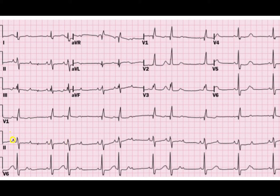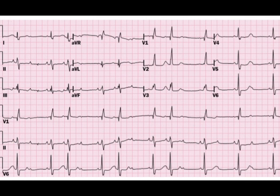Since the P-to-P interval is constant here — as you can see: 300, 150, 100, then again 300, 150, 100, and again 300, 150, 100 — the P waves are marching at a regular interval, meaning they are coming from the same focus.